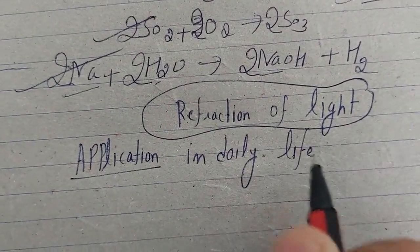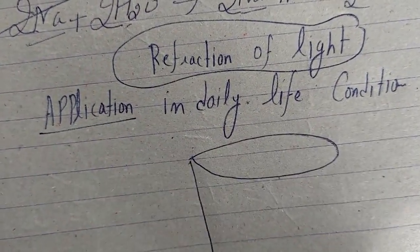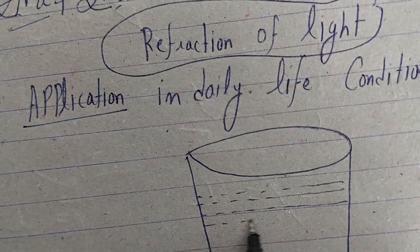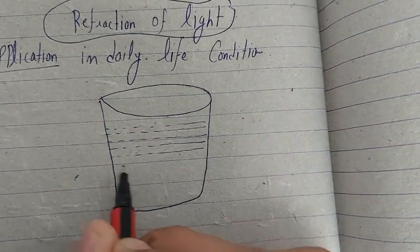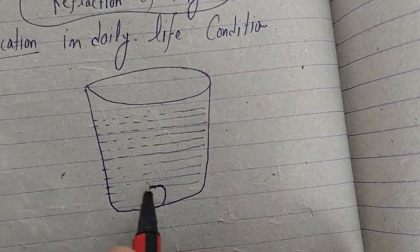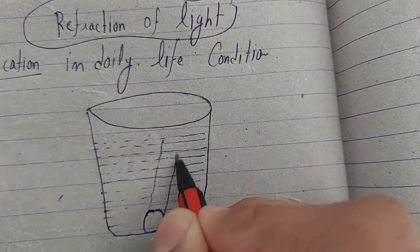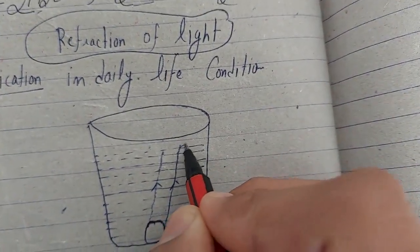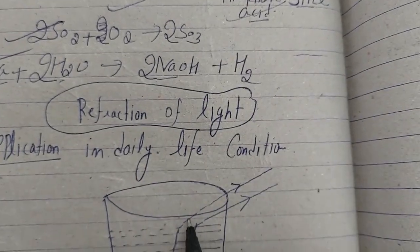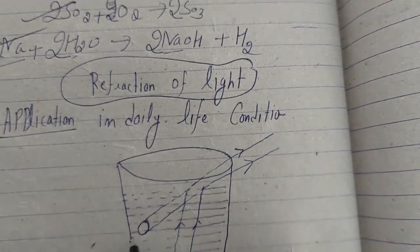Suppose a glass of water is there, filled with water. A coin is placed at the bottom of that glass in which water is filled. The rays will go from denser to rarer medium and they will bend away from the normal. As light travels in a straight line, the coin will appear at a different position.